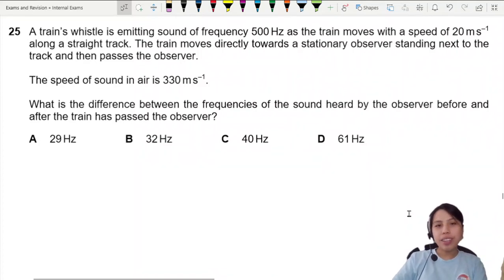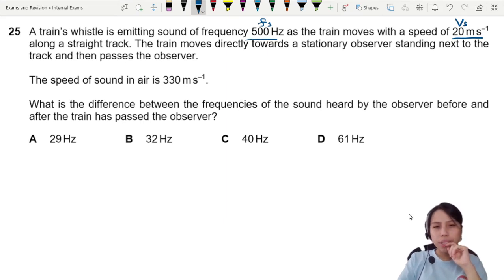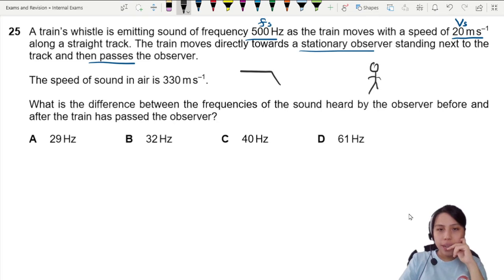A train's whistle is emitting sound of frequency 500 Hertz—this is called the source frequency—as it moves with the speed of the source 20 meters per second. It moves toward a stationary observer and then it passes the observer. So there are two stages, we could be a bit careful here. Your human is here. The train moves this way, then the train passes the observer.